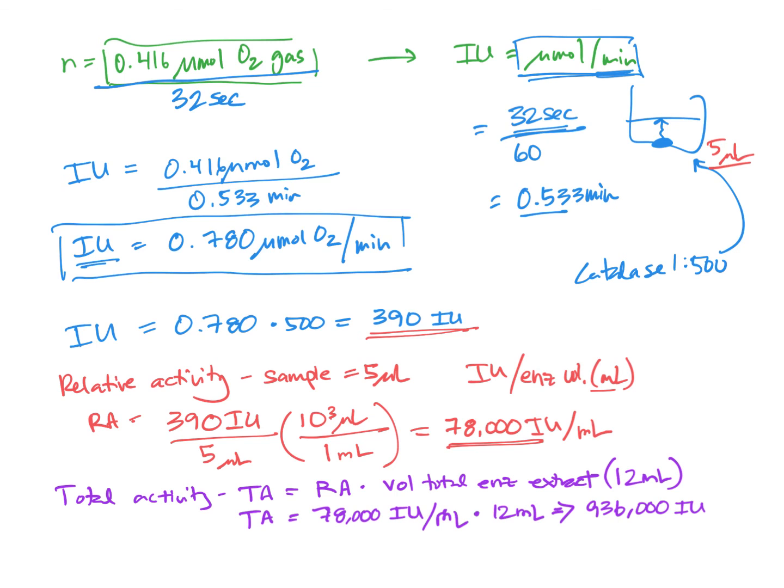Final calculation. Beef liver, of course, or any of these enzyme sources doesn't originally exist in liquid form. Instead, it exists with something that has a mass in grams.